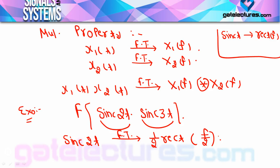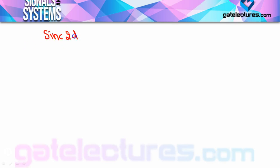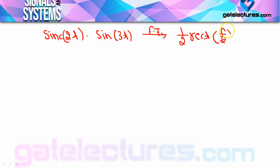अब sinc(3t) की बात करें तो sinc(3t) का Fourier transform क्या होगा: (1/3)·rect(f/3)। तो sinc(2t)·sinc(3t) का Fourier transform बन जाएगा (1/2)·rect(f/2) convolved with (1/3)·rect(f/3)। यह हमारा Fourier transform आ जाएगा। अब अगर आप इस convolution को solve कर लें तो आपको final answer मिल जाएगा।